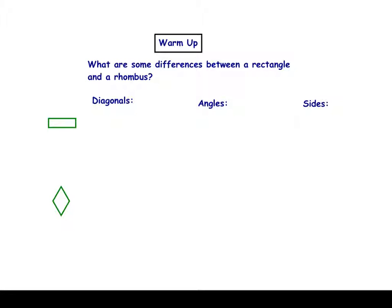So on this first page here, I want you to take a minute to list all the differences between the diagonals, angles, and sides of a rectangle and a rhombus — all of them that you can remember from the properties. So why don't you pause the video, write down all the differences you can think of, and then I'll come back.